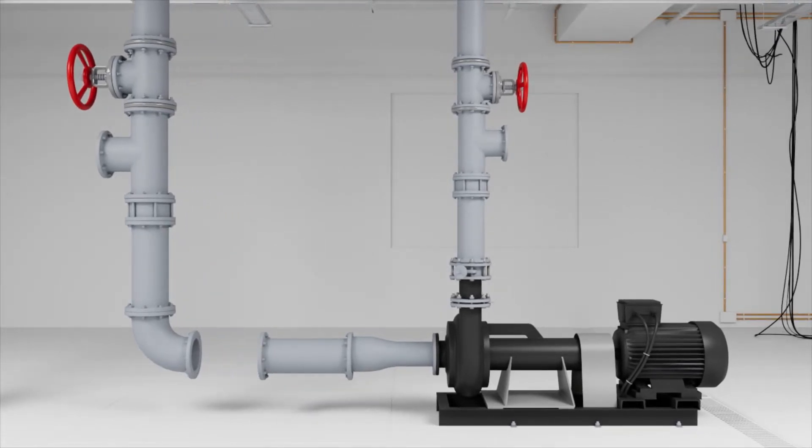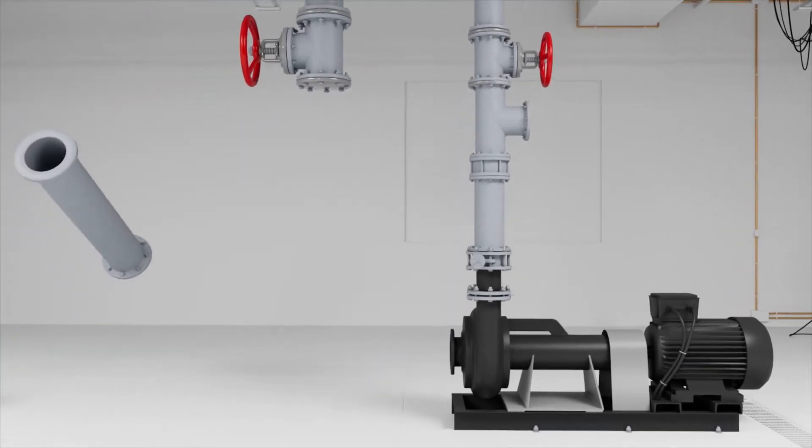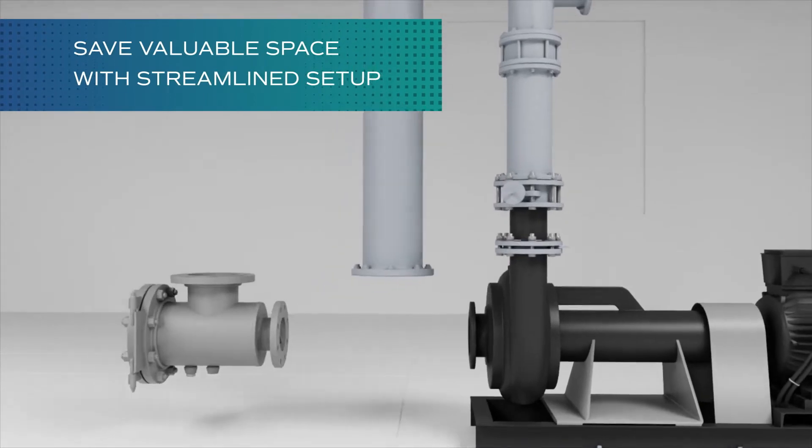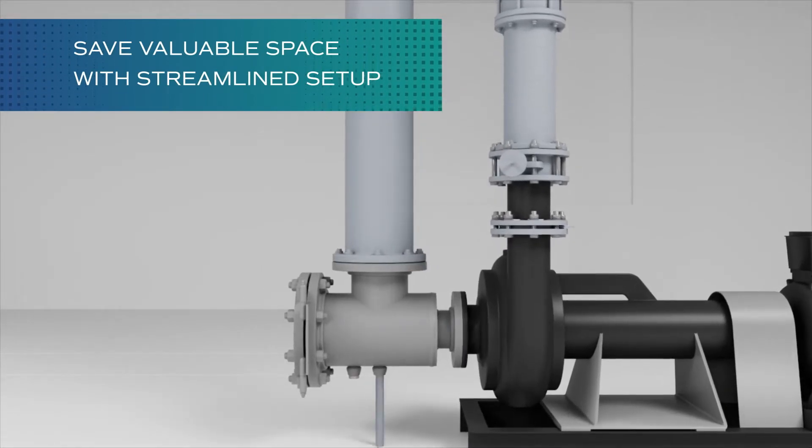there is no longer a need for an additional strainer, reducer, elbow pipe, and flow stabilizer. And with the removal of these components, valuable mechanical room space is saved.